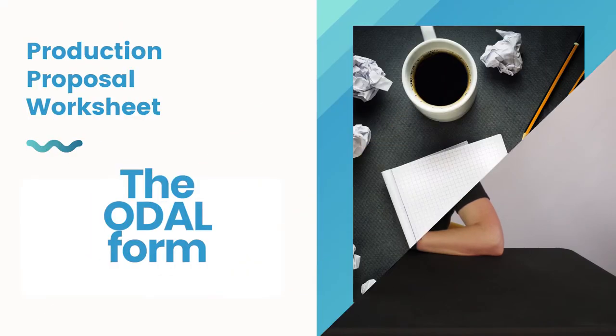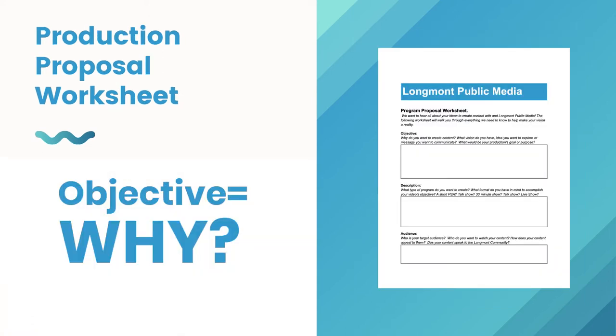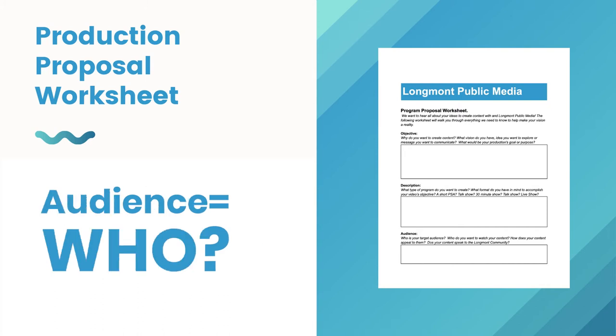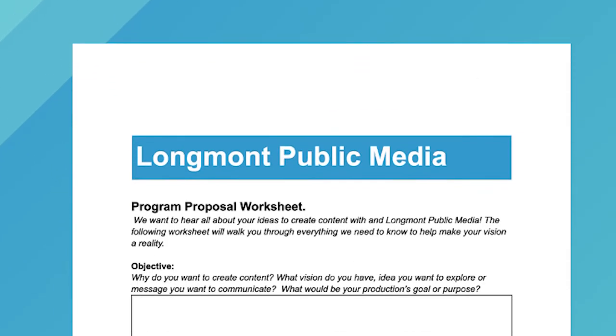I've simplified it for the public access community by calling it the ODAL form. ODAL is a way to remember your objective, description, audience, and location. The objective is your why — why are you doing this? Your description is how and what you're doing. Your audience is who, and then the location is where. I'm going to dive deeper into this the further we go. As you can see in the graphic, we do have a form which you can access at longmontpublicmedia.org/resources.